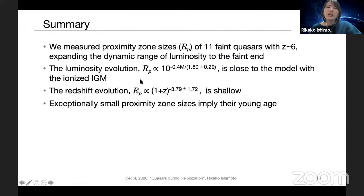So in summary, we measured the proximity zone sizes of 11 faint quasars at redshift 6, and we expanded the dynamic range of luminosity to the faint end. The obtained luminosity evolution is close to the model with the ionized IGM, suggesting that the surrounding IGM is mostly ionized at the epoch. And redshift evolution is relatively shallow, implying that the proximity zone sizes are not sensitive to the neutral fraction of the universe. And there are some exceptionally small proximity zone sizes, implying their quasar young age.